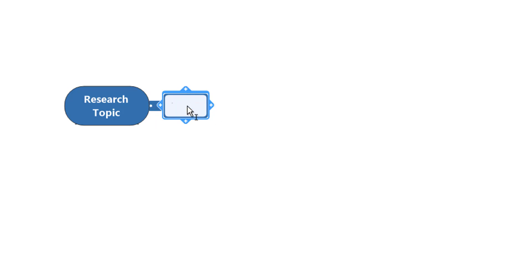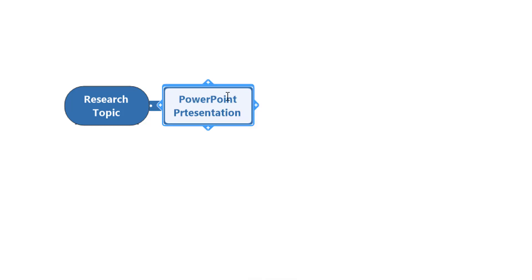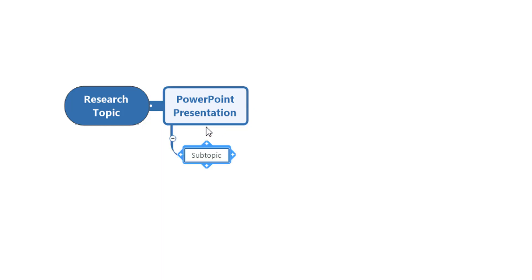I'm going to throw some content in here to give you the methodology. I'll type in 'PowerPoint Presentation'. I'll right-click to make sure it's capitalized correctly. Now I'm going to create the next branch off PowerPoint Presentation by clicking the plus option — there's my subtopic. I can put in 'Notes from Your Lecture' and tab off, then click back on PowerPoint Presentation.